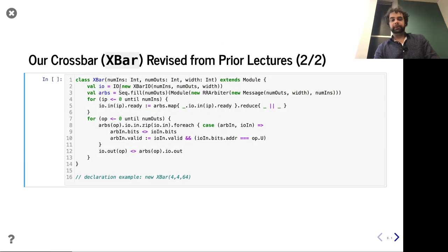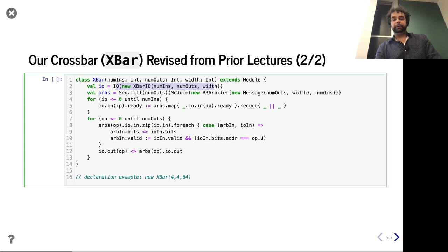Also like from before, we had our crossbar. Remember, our crossbar really was just an arbiter per output port. Notice how we can just use our bundle for the IO. In this case, we're using a little bit of functional programming to do this stuff — we can have all of our arbiters. But now, when it comes time to connect them all, we actually can use functional programming inline. It's a lot more concise than before.